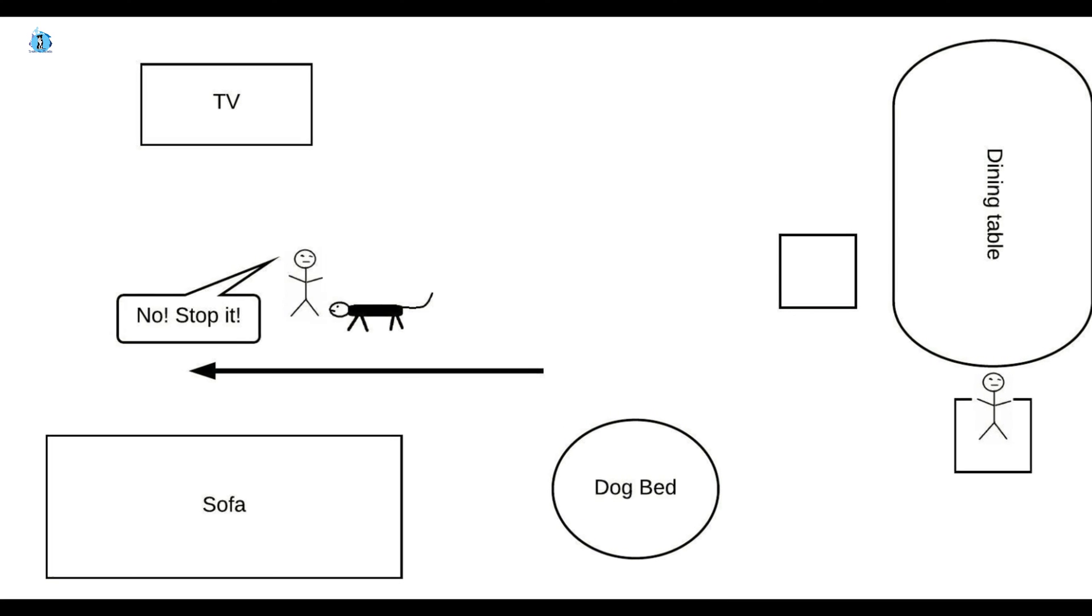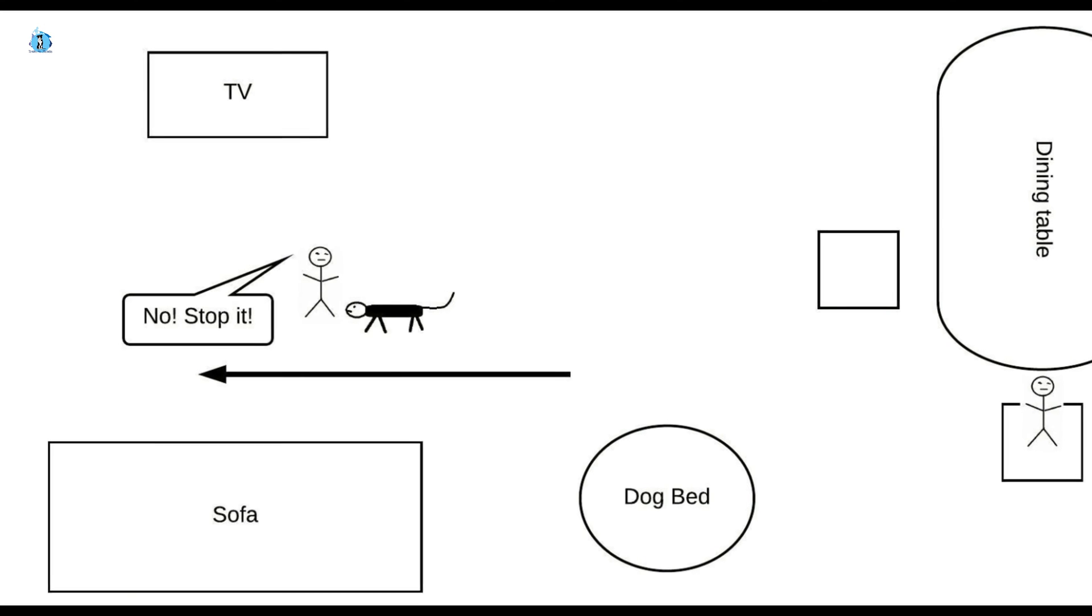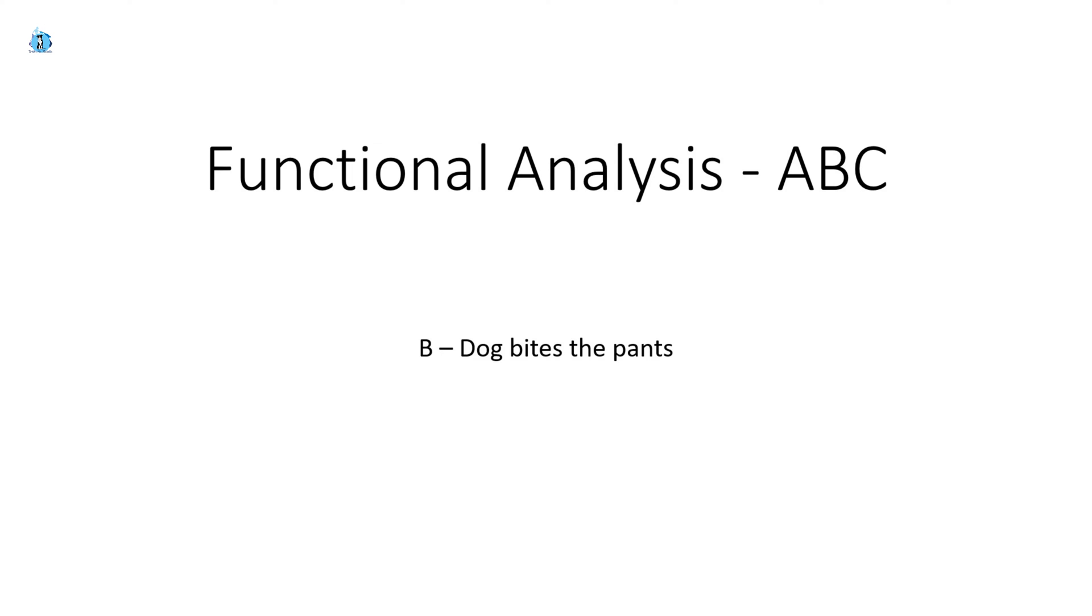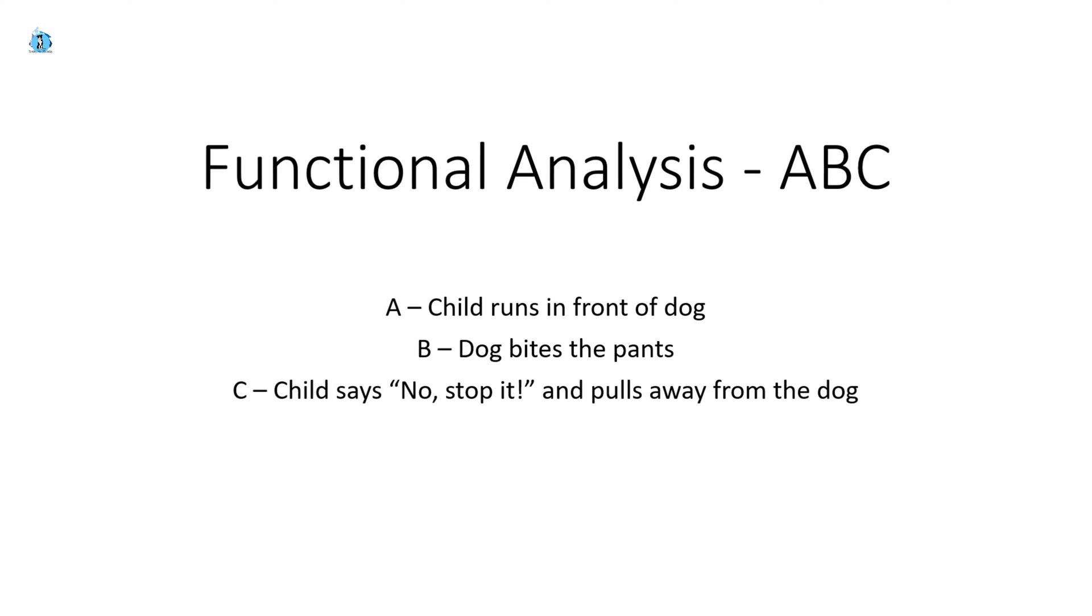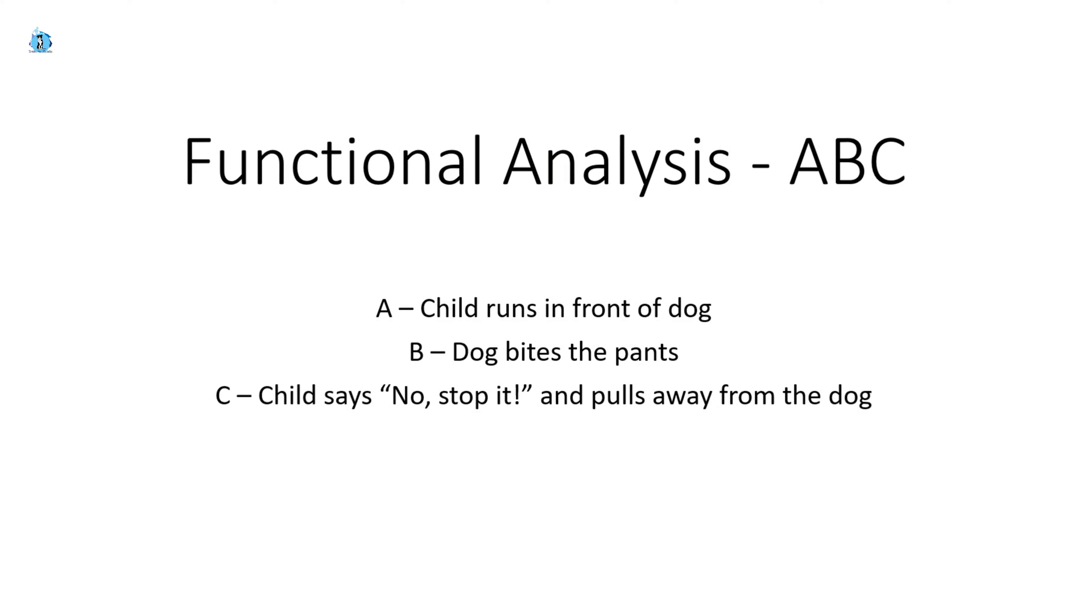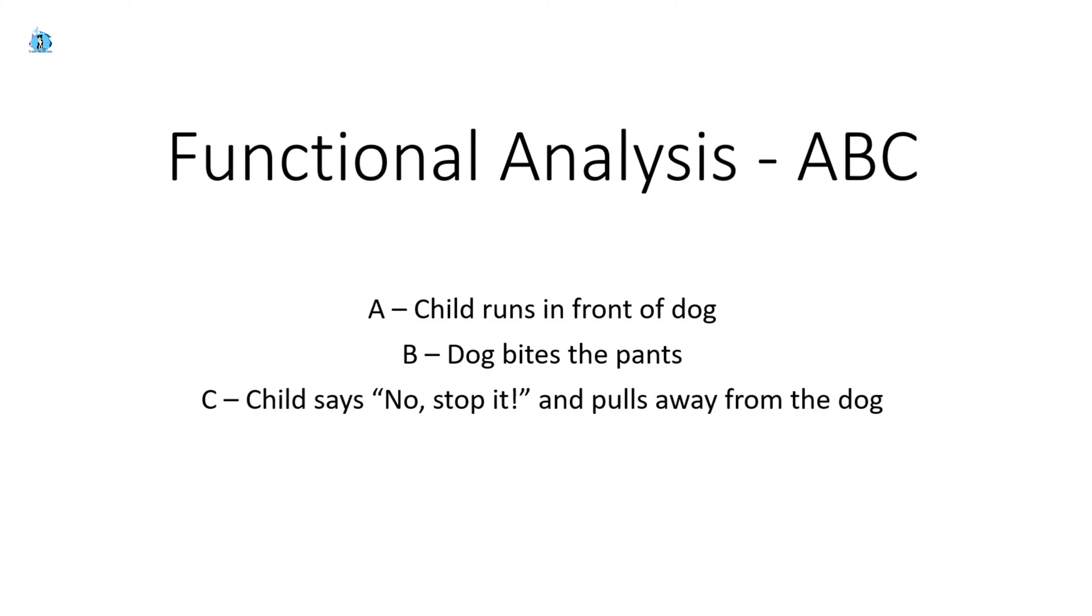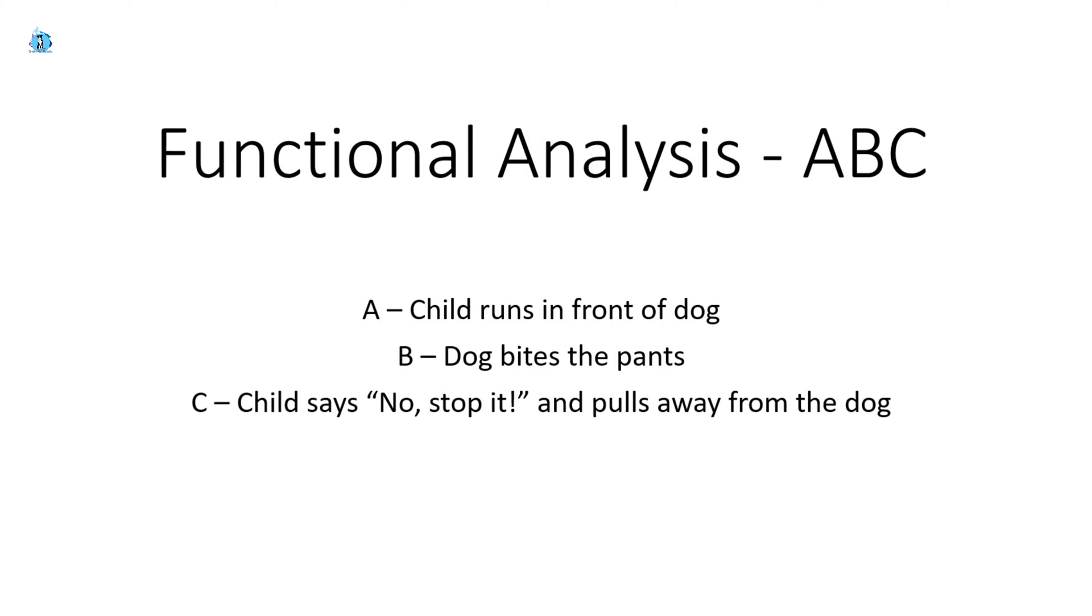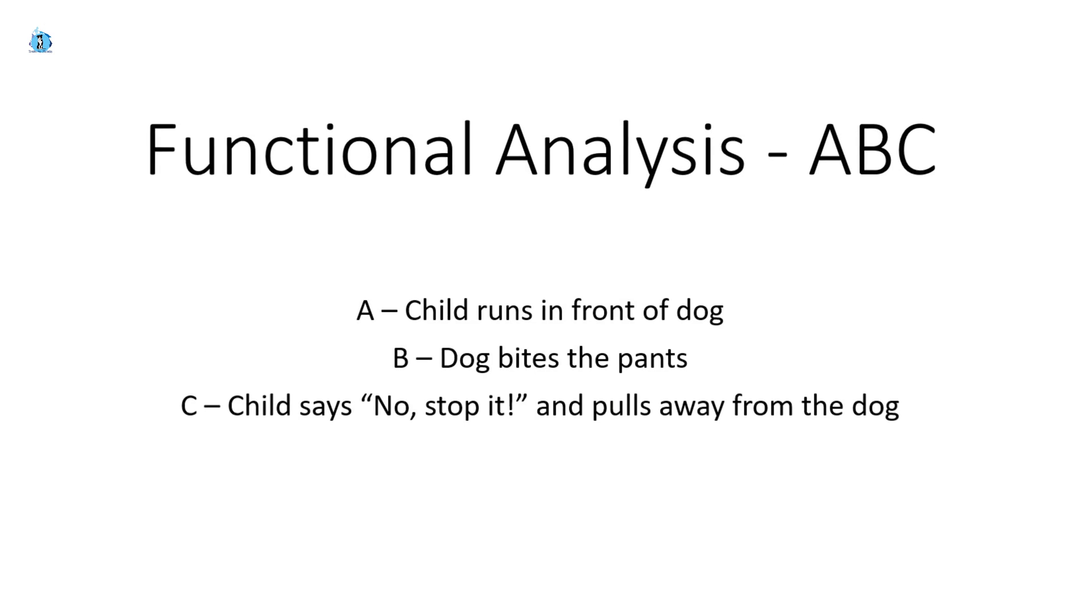Let's run a functional analysis on the behavior we have in front of us. We want to look at this from the dog's point of view. So the behavior of interest in this case is the dog bites the pants. The immediate antecedent that happens just before we see that behavior is that the child runs in front of the dog. The consequence is that the child says no, stop it and pulls away from the dog.